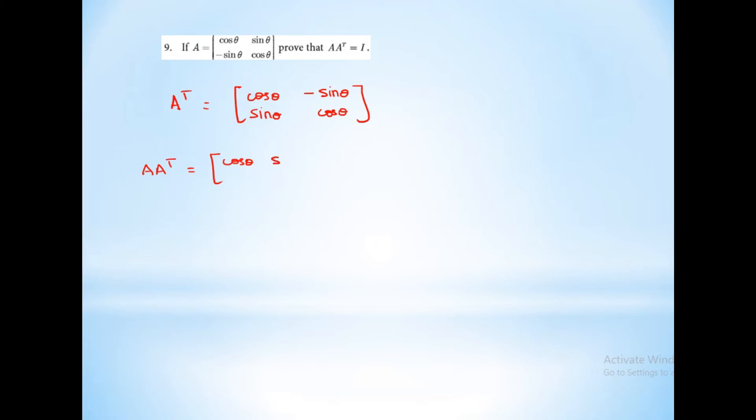For the next sum, prove that A into A transpose is equal to the identity matrix. First, A transpose equals cos θ, sin θ, minus sin θ, cos θ. So A into A transpose equals cos θ, sin θ, minus sin θ, cos θ multiplied by cos θ, minus sin θ, sin θ, cos θ.